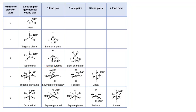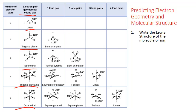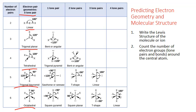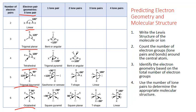Now if there are zero lone pairs on a central atom, the molecular structure is actually exactly the same as the electron geometry. To use this chart to predict electron geometry and molecular structure, we start with a Lewis structure, then count the total number of electron groups — lone pairs and bonds — around the central atom, and use that to identify the electron geometry or the row in the table. We then count the number of lone pairs on that central atom to determine the appropriate column.